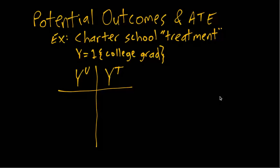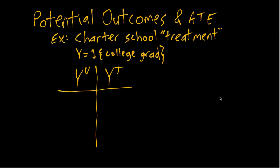We can imagine one type of student where regardless of what kind of school they go to, they do not graduate from college in either parallel universe. Another type does not graduate in the untreated universe but does graduate when they go to the charter school. A third type is the opposite — outcome one in the untreated and zero in the treated. And a fourth type graduates from college regardless of which school they attend.